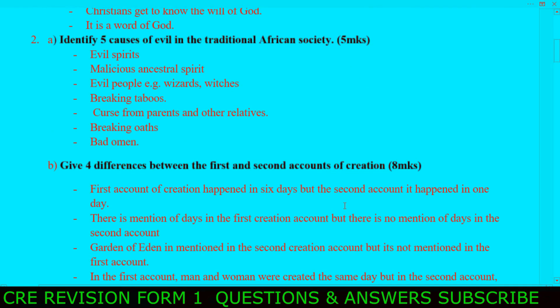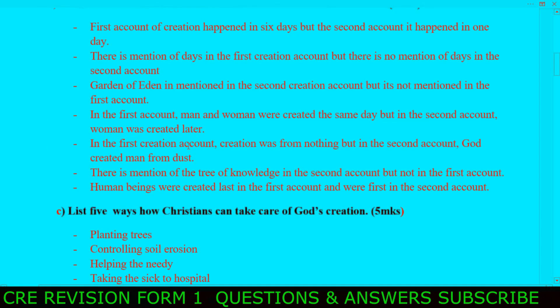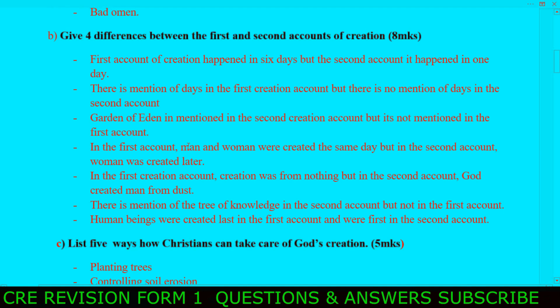Next, breaking oaths. Next, bad omens. Now question B: give the differences between the first and second account of creation — you get eight marks. Number one, the first account of creation happened in six days, but the second account happened in one day. Number two, there is mention of days in the first creation account, but there is no mention of days in the second account.